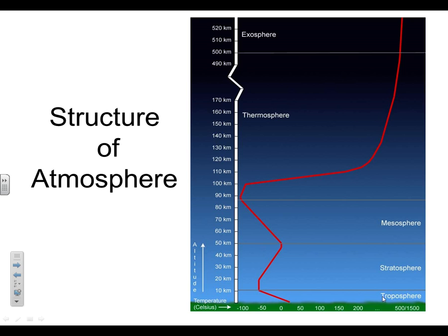The four layers are going to be the troposphere, stratosphere, mesosphere, and thermosphere. The exosphere is usually considered part of the thermosphere. Now go to the handout that has the side view of the layers of the atmosphere, and we're just going to look at that first and label it, then go back to the green sheet and fill in a few details about each of the layers.